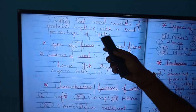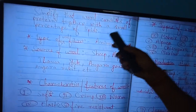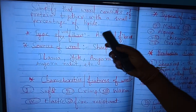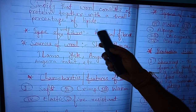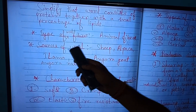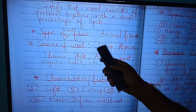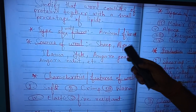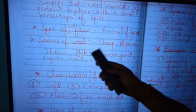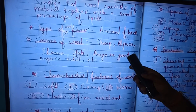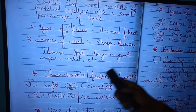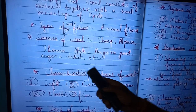Wool consists of protein together with a small percentage of lipids. Types of wool fiber sources include sheep, alpaca, llama, yak, angora goats, and angora rabbits, etc.